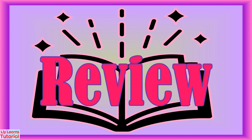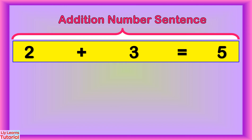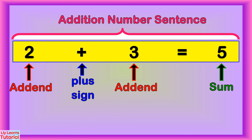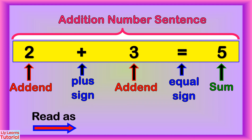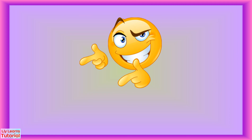Let's review! This is an addition number sentence. 2 and 3 are the addends. 5 is the sum. This is the plus sign and an equal sign. You can read this as 2 plus 3 equals 5. Now you know the basic concepts of addition. It's your turn to show what you've learned. Let's do this!